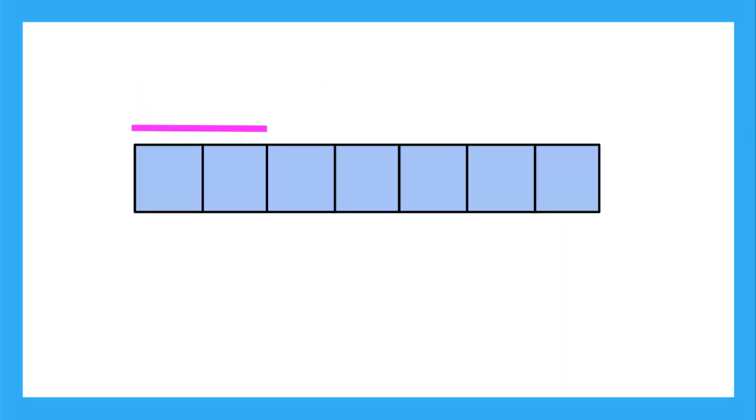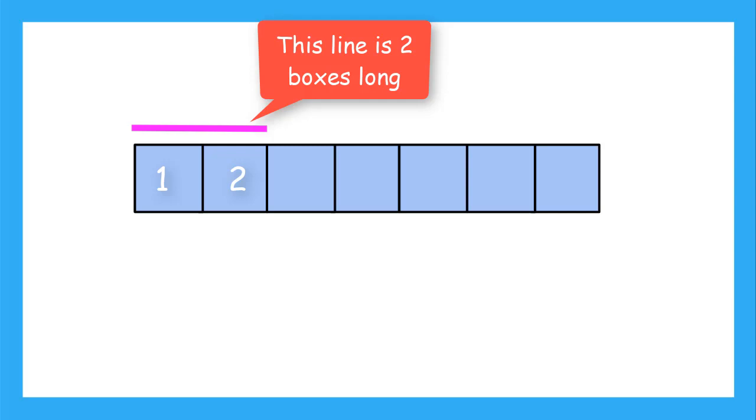Using the blocks, can you determine how long the pink line is? We only count the number of boxes under the line. For this one, I count 1, 2 boxes. So this line is only 2 boxes long.